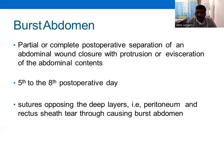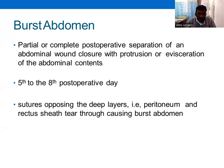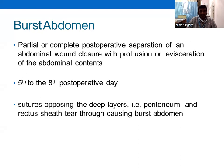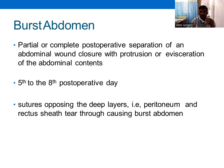Burst abdomen involves protrusion of normal abdominal contents — either omentum or intestine. The most common time period for burst abdomen to occur is between the fifth to eighth post-operative day. It results from tearing through all the abdominal layers — including peritoneum and rectus sheath — when sutures opposing the deep layers fail.